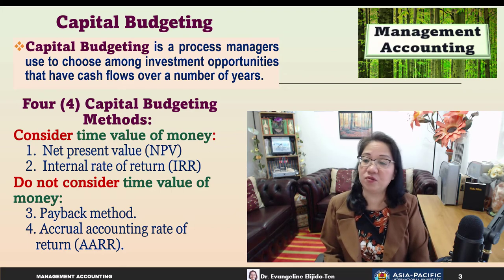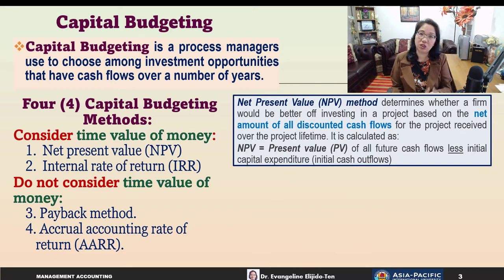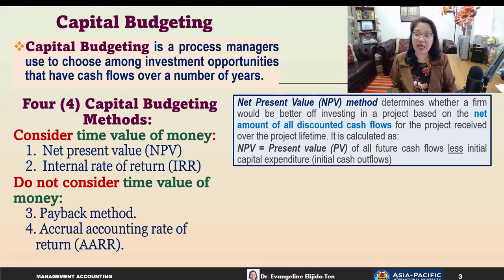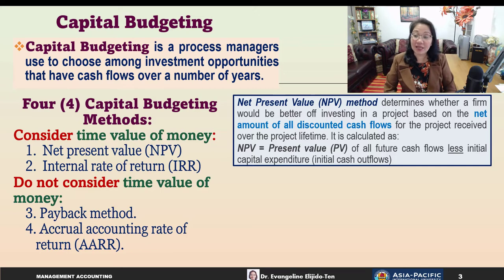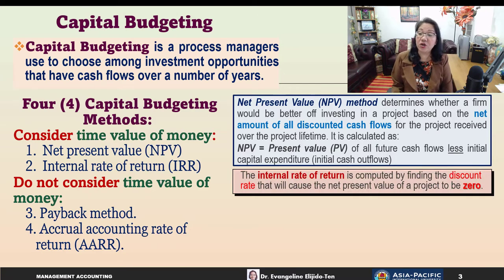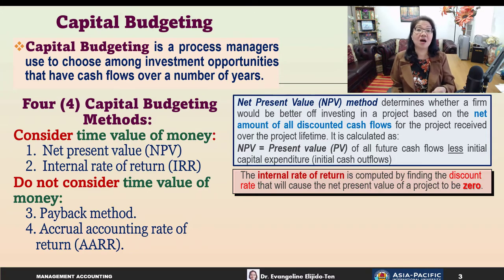Under the NPV method, we determine whether the firm would be better off investing in a project based on the net amount of all discounted cash flows received over the project's lifetime. NPV is simply the present value of all future cash flows minus the initial capital expenditure, giving you a dollar figure. Internal rate of return, on the other hand, is computed by finding the discount rate that will cause the NPV of the project to be zero — so the IRR is a percentage.